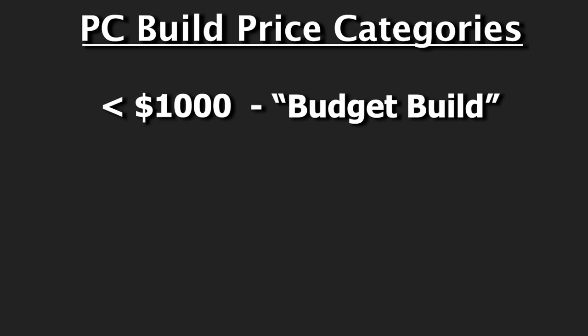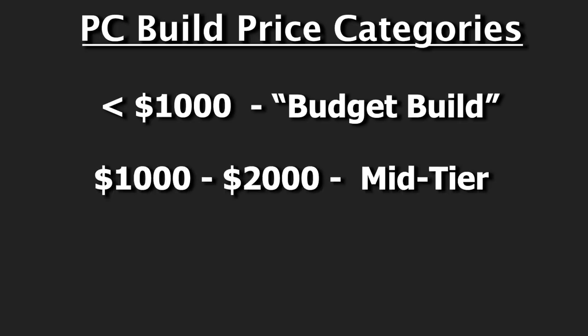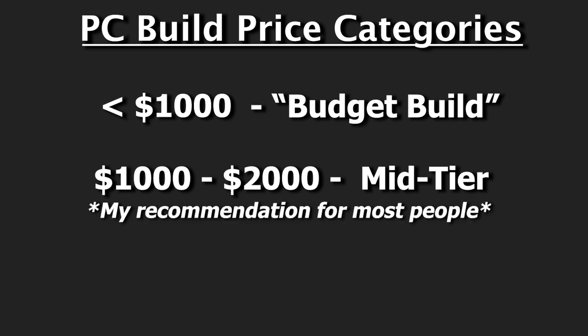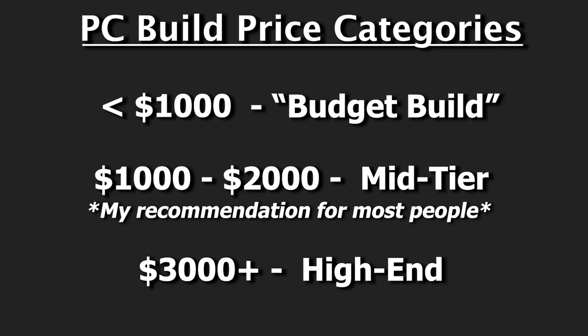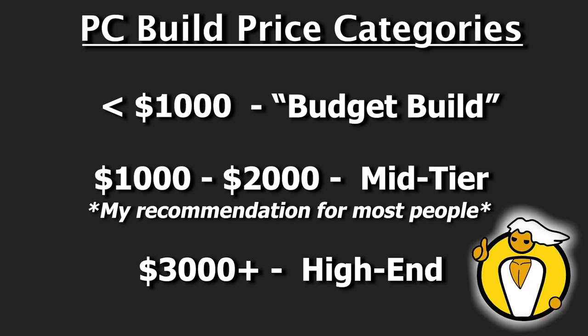The second category is for the mid-tier gamer. It's under $2,000 and I would say it's my recommendation for most people. You won't need to upgrade for a few years and you'll be able to play on high settings and high resolutions right away. The third group is the high-end — the $3,000 and up tier — and it's really for the PC master race individuals, the ones that have to have the best and can't settle for anything less. Putting yourself into a budget category gives you an estimate of what parts you'll need to be shopping for.